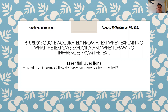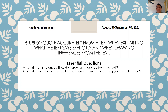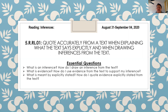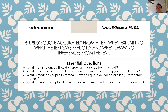Our essential questions are: What is an inference? How do I draw an inference from the text? What is evidence? How do I use evidence from the text to support my inference? What is meant by explicitly stated? How do I quote evidence explicitly stated from the text? What is meant by implied? How do I state information that is implied by the author?